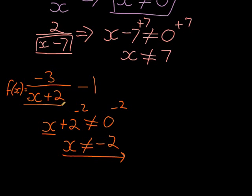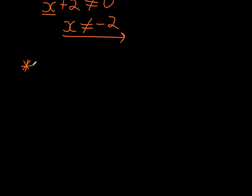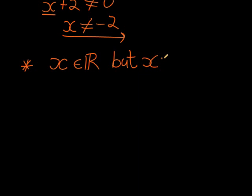How do I write the domain? There are actually three ways. The first way: we can say x is any real number, but x may not equal negative 2. That's one way of writing it. x can be any real number — this 'element of' symbol means it's one of the numbers in all of the real numbers — but x may not be equal to negative 2.